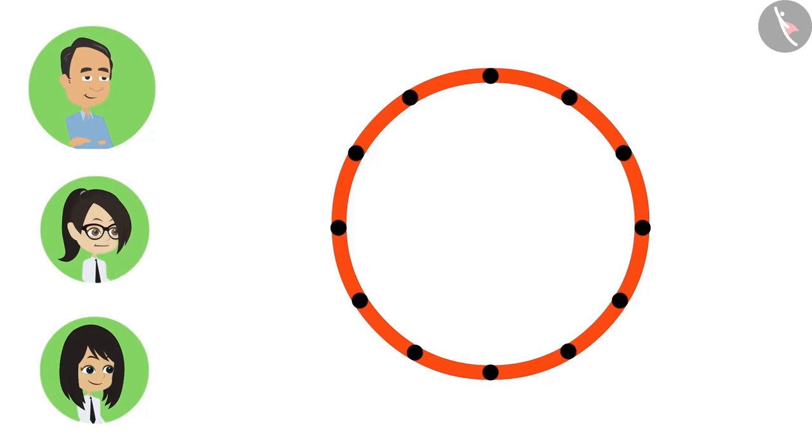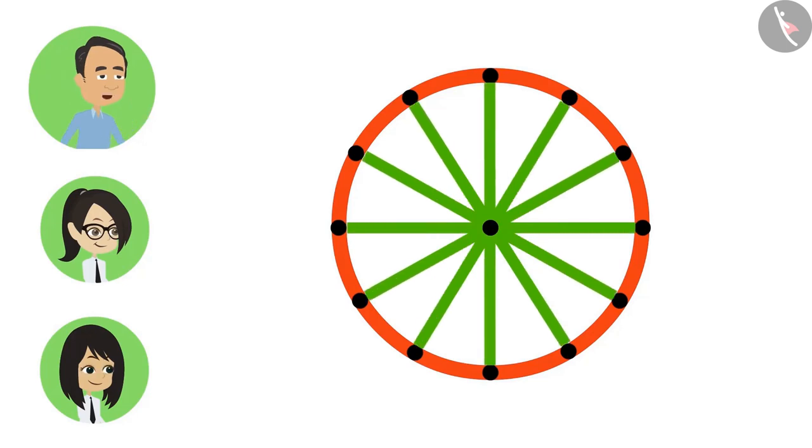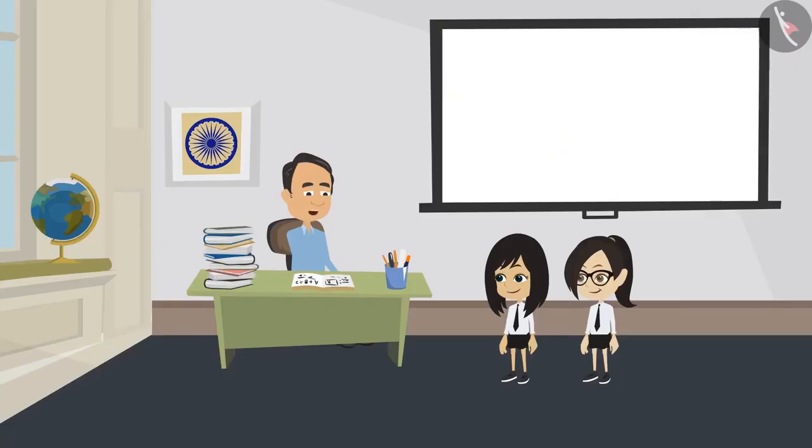Absolutely correct. And how many points can there be on a circle? There can be many. Absolutely right. And lines can be drawn from the center to all those points. Now tell me, what will all these lines be called? Sir, we will call it a radius only. Absolutely correct.